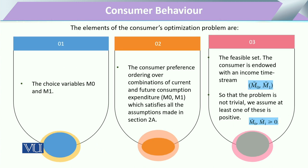If the consumer has optimized, there should be certain elements. There will always be choice variables: one will be m0 and one will be m1, respective to time t0 and t1. The second element is the consumer preference ordering over the combinations of current and future consumption expenditure — m0 and m1 — which must satisfy all the assumptions of consumption patterns, meaning the consumer should be rational and utilize all income.